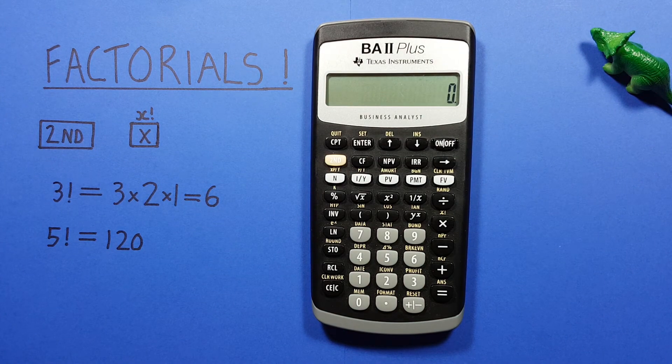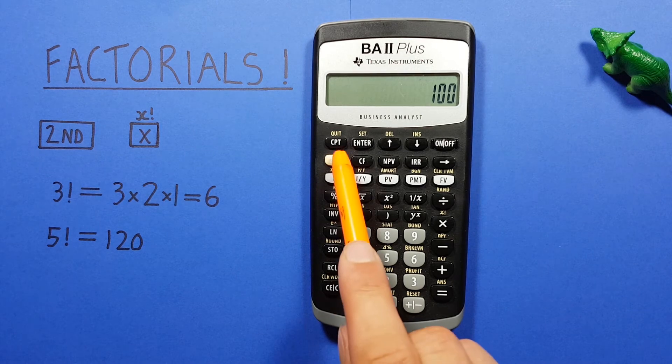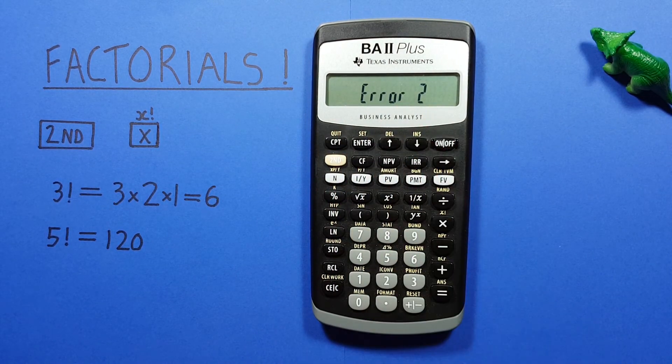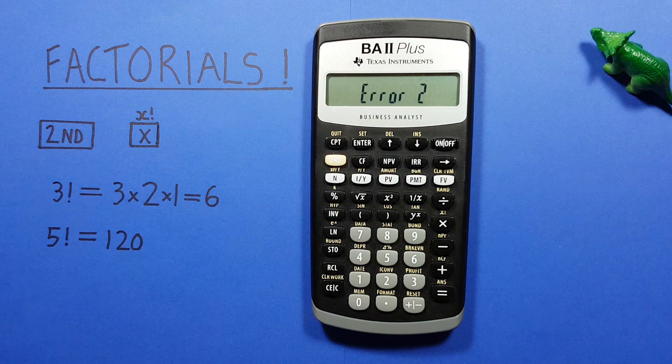If you try to find the factorial of a large number like, let's say, 100 factorial, you'll see an error like this. This is because the resulting number is just too large for this calculator to handle.